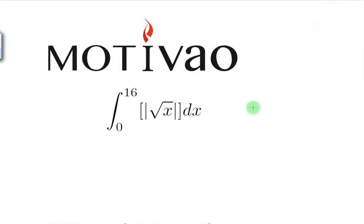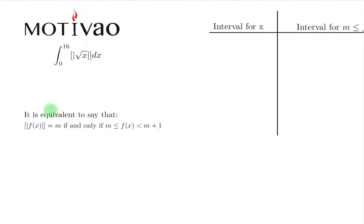Now things are gonna get a little more interesting. Like always let's go straight to the definition. It is equivalent to say that the floor of f of x equals m if and only if m is less than or equal to f of x less than m plus 1, and in this case f of x is equal to the square root of x.